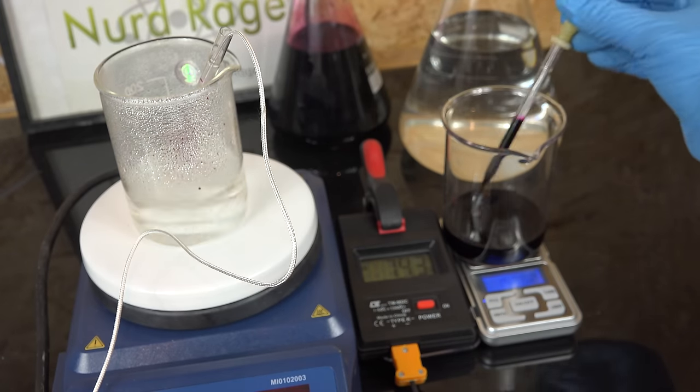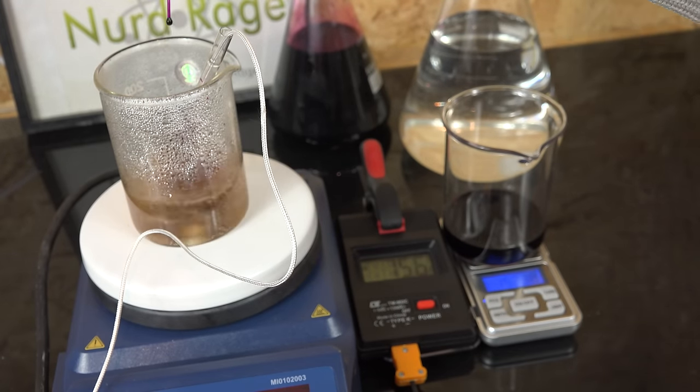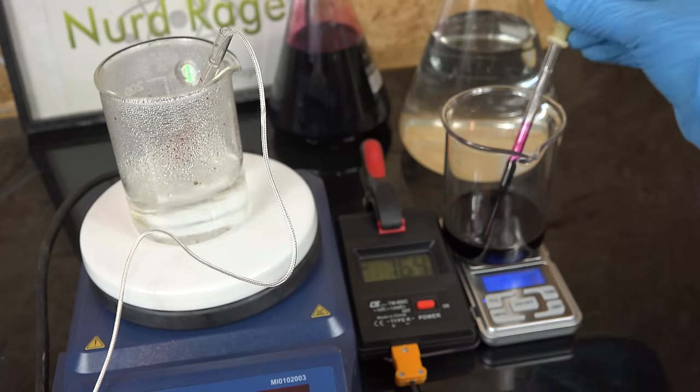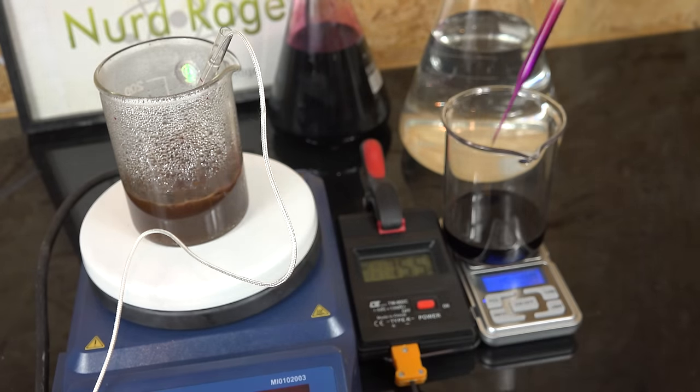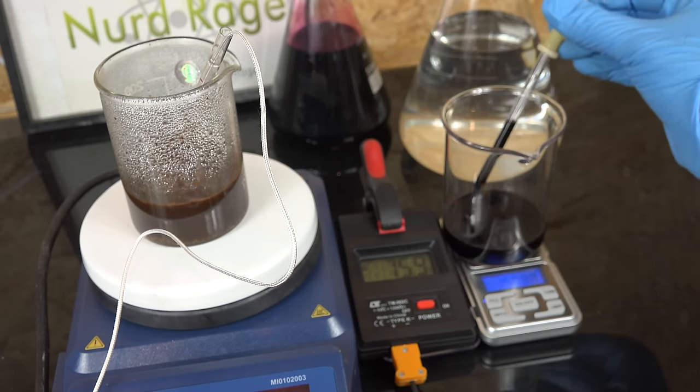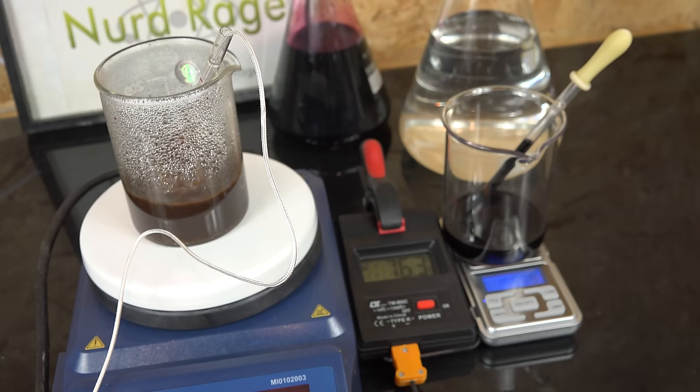When that happens it means all of the sodium oxalate has been consumed. For this first trial we're just trying to get a rough estimate of how much we need so we don't need to be too precise. And it looks like we're done. Now weigh our beaker of potassium permanganate, subtract the difference, and that gives us a rough estimate.